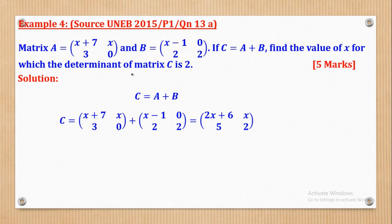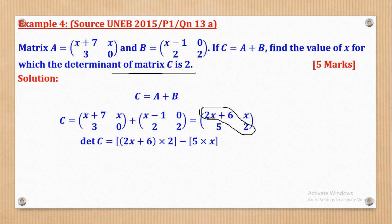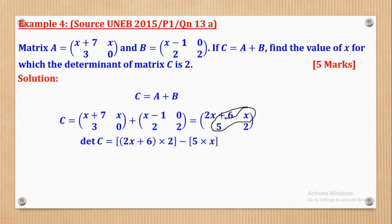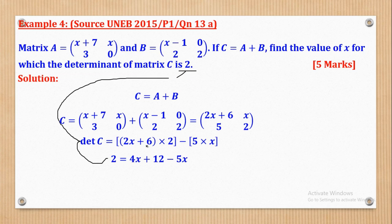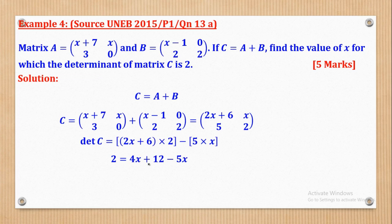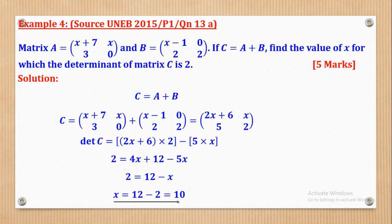Since the Determinant of Matrix C is 2, we compute: Det(C) = 2 times (2X+6) minus 5 times X, set equal to 2. Expanding: 2 times (2X+6) gives 4X plus 12, minus 5X. Simplifying: 4X minus 5X gives negative X, so we have negative X plus 12 = 2. Making X the subject: negative X = 2 minus 12 = negative 10, so X = 10.